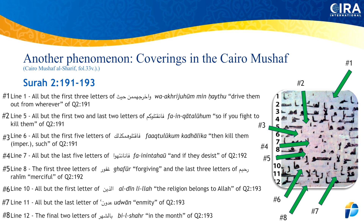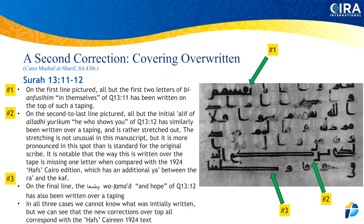We're not going to go through each one of them; it's not that important. You can see we've written up there what they are and what you can see of them. What I think is much more damaging is the next one we're going to show. This one is also from the Hussaini manuscript — Surah chapter 13, verse 11 to 12. Now there are three distinct coverings here. You can see them quite easily; you don't have to have high definition to see this one.